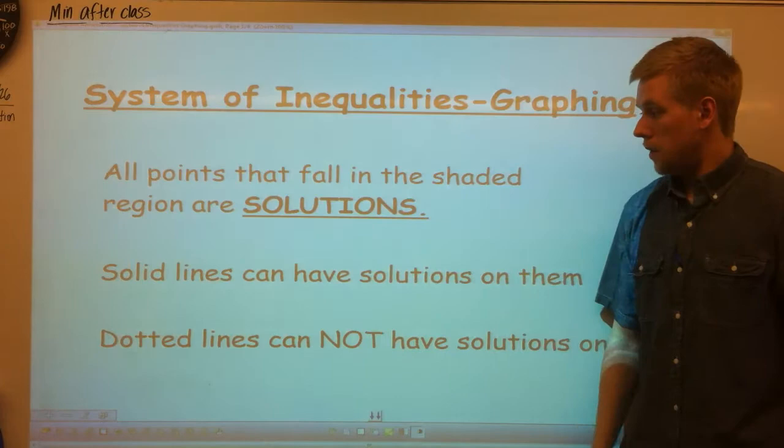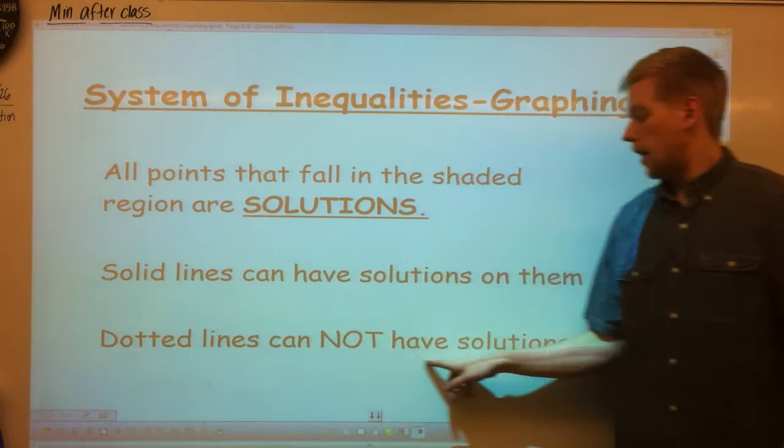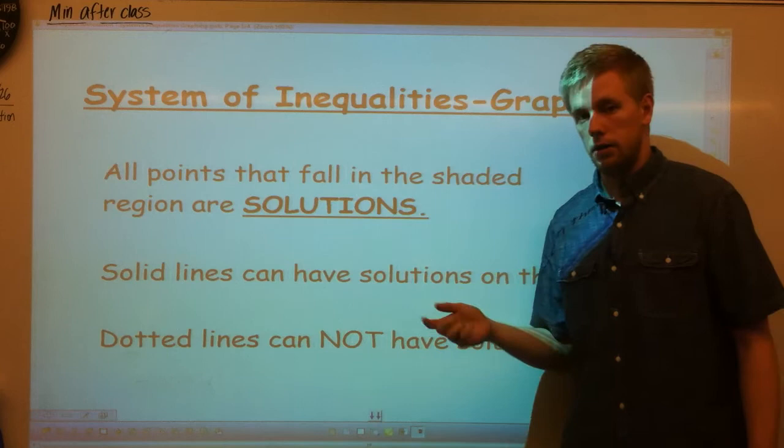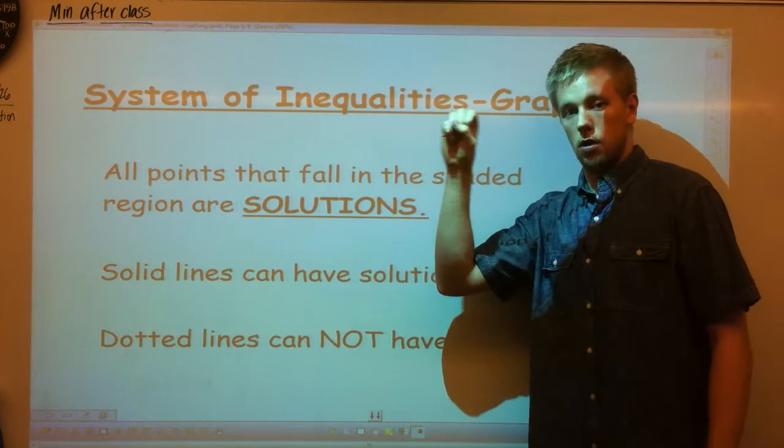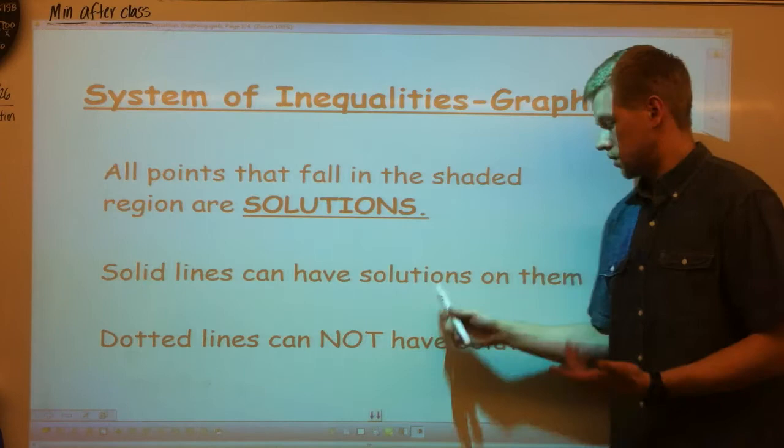Solid lines can have solutions on them. However, dotted lines cannot have solutions on them. What am I talking about? Remember, inequalities are less than or equal to, greater than or equal to, greater than, and less than, all those symbols that you need to remember. They're going to have shadings on them, just like when we had a number line and you would circle with an open circle or a closed circle and shade it which way that it was pointing. It's the same way with linear equations. You'll see what I'm talking about right now.